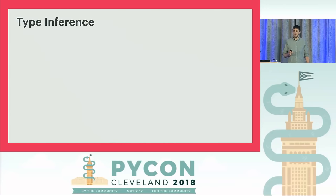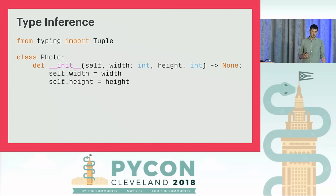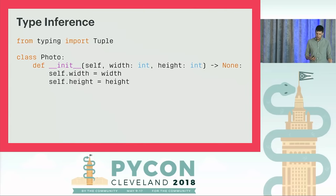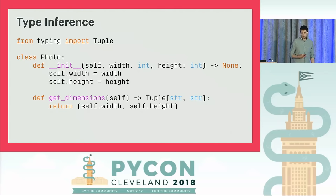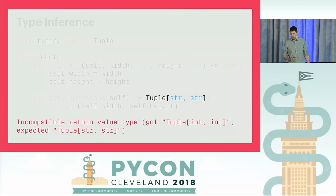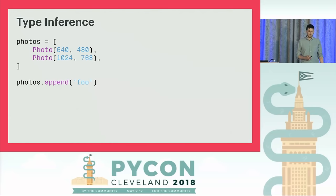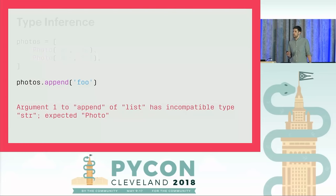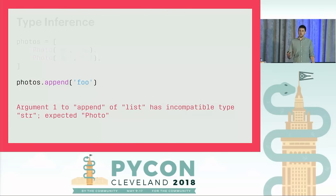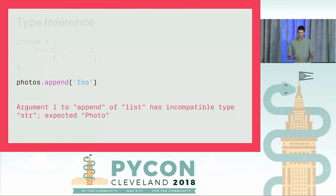The type checker asks us to annotate our function signatures to validate assumptions about input and output types. In between, there's a lot it can infer. In a Photo class, knowing the width and height arguments to the initializer are integers, it infers every Photo instance will have integer width and height attributes. If in another method we try to return them as a tuple of strings, the type checker catches that and says no — that's a tuple of integers. We can also infer types of containers: if we create a list of Photo objects and try to append a string, the type checker flags it.